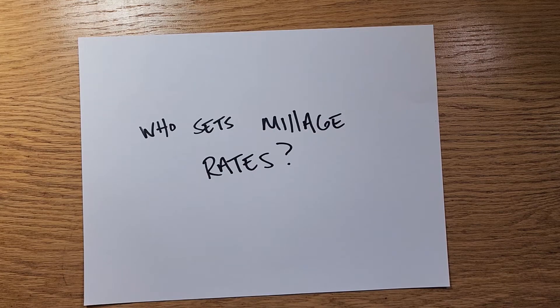Who sets millage rates? Taxing authorities — that would be county governments like a city or town, the schools, the water management districts, anything like that. What these entities do is set a budget and then figure out the millage rate to come up with the money essentially, and that's how they fund the budget and everything they need for the county.